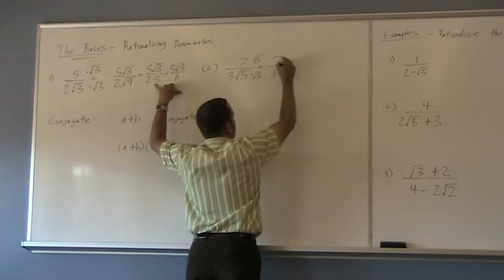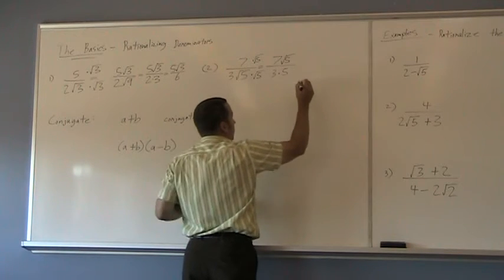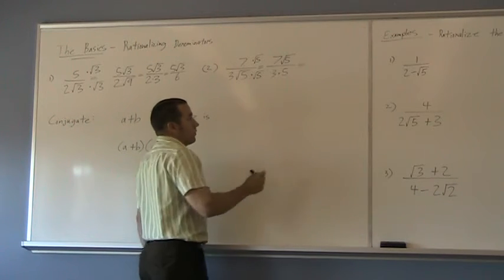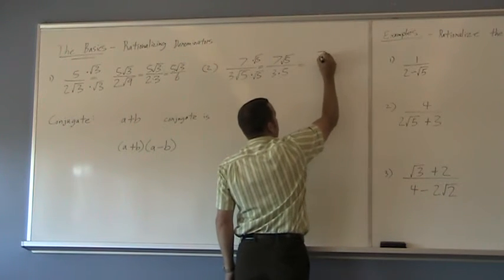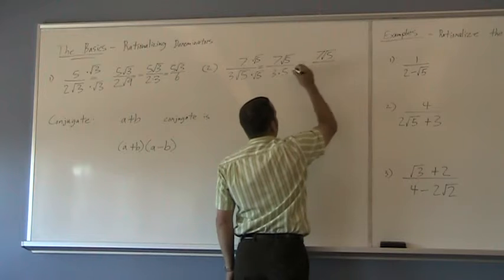On the top, we're going to end up with 7√5. So, then our final answer becomes 7√5 over 15.